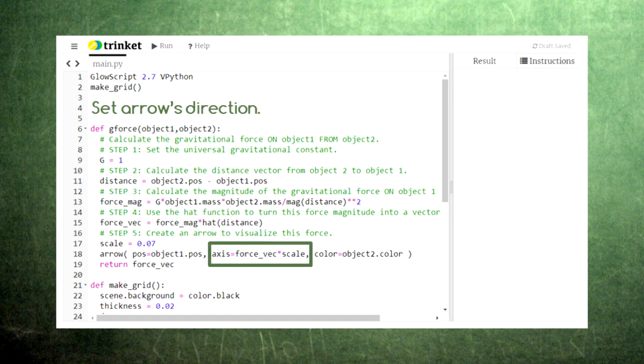Next, we need the direction the arrow will point and its length, which will be the force of gravity. We multiply the force of gravity times a scale factor so that the arrow stays within the screen. All of our arrows will have the same scale factor so that we can compare them later. And lastly, we need to specify the arrow's color. We use the color of object 2 so that we can tell which object is exerting the force.